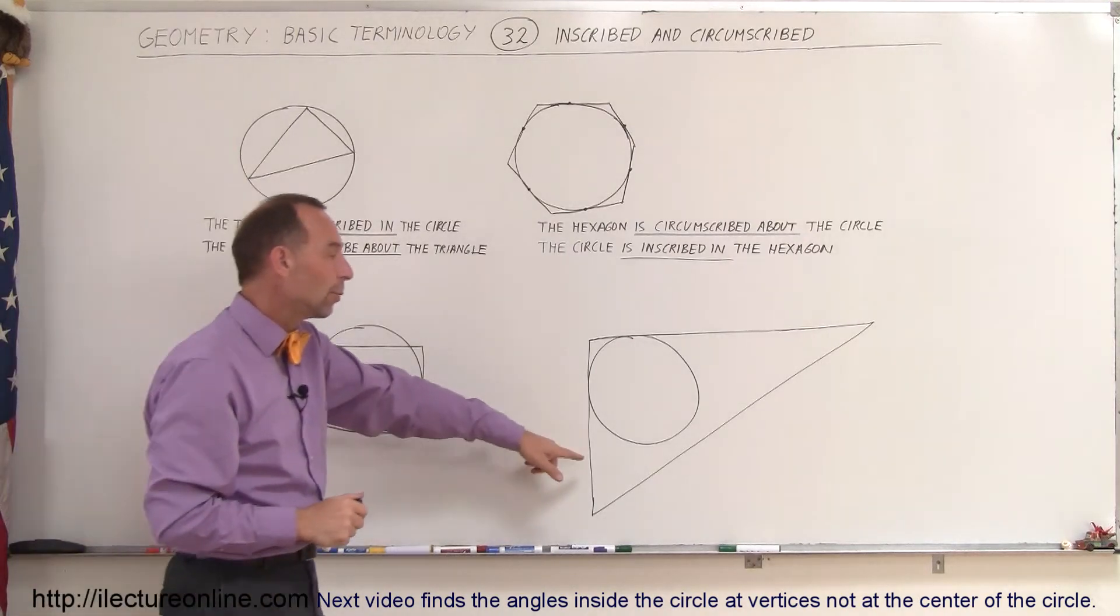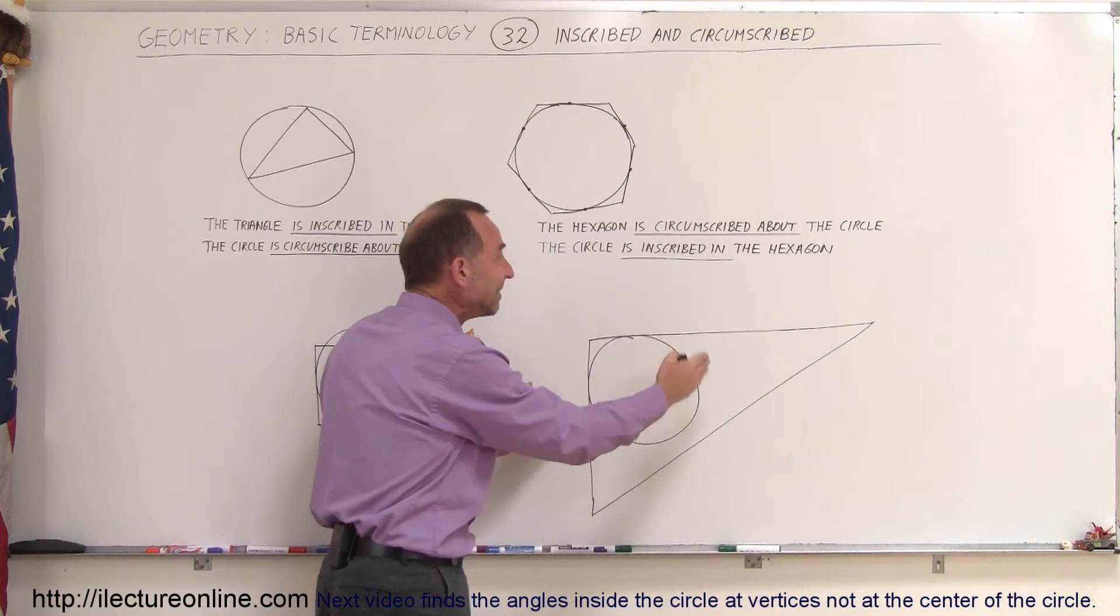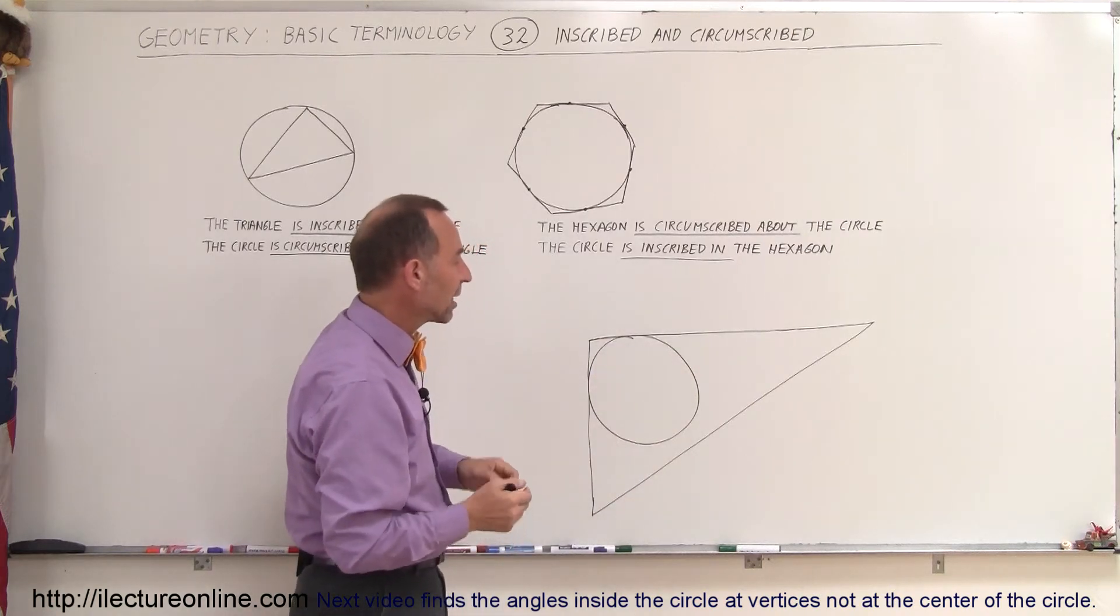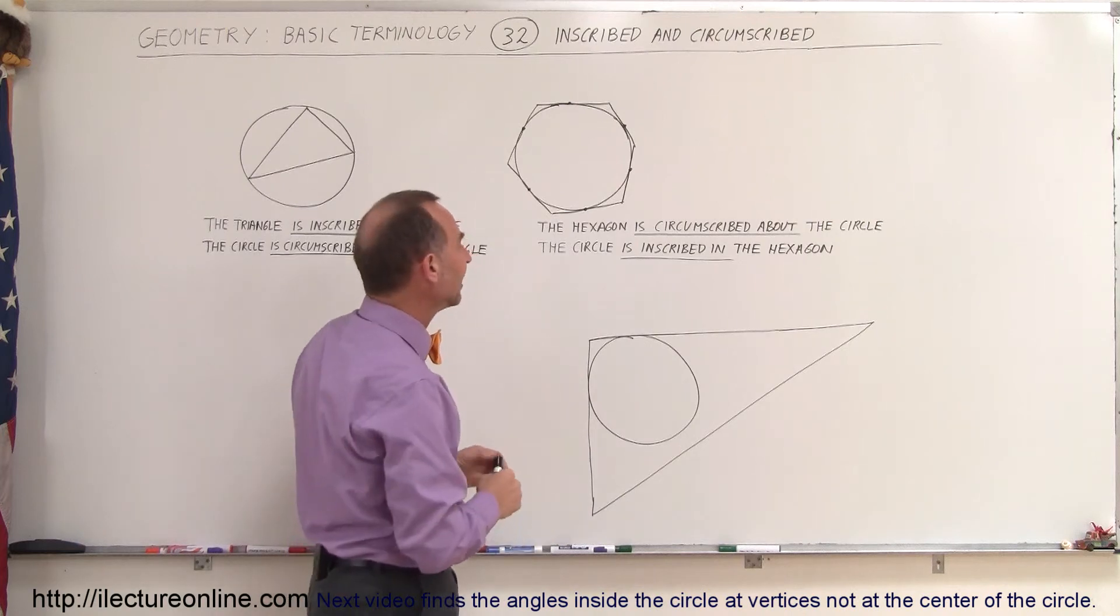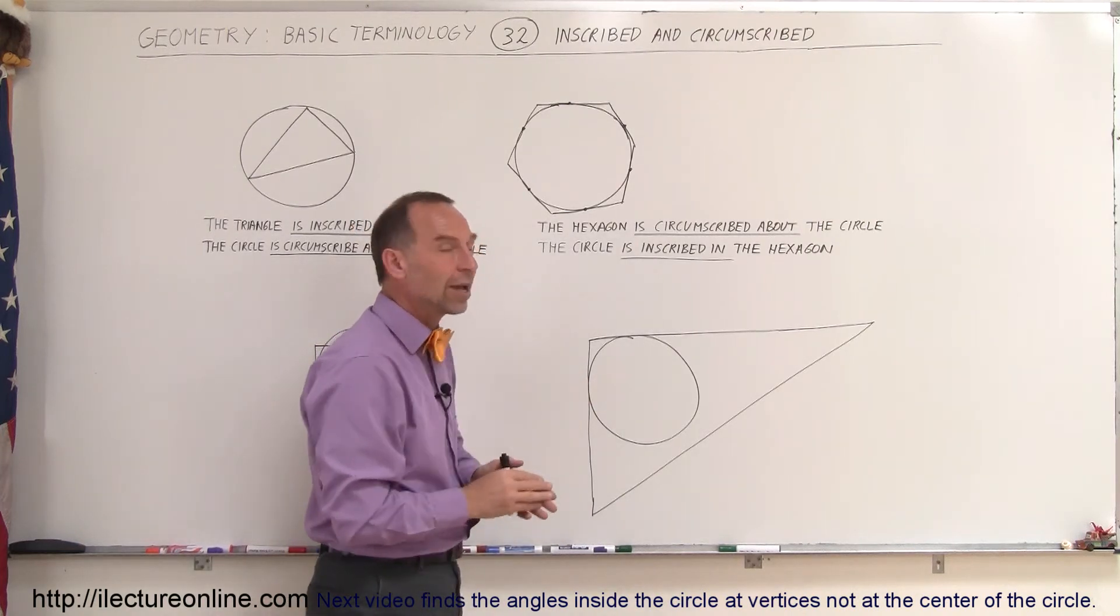Here's another example where even though the circle is inside the triangle here, you can see that this side does not touch the circle. So we cannot say that the circle is inscribed in the triangle.